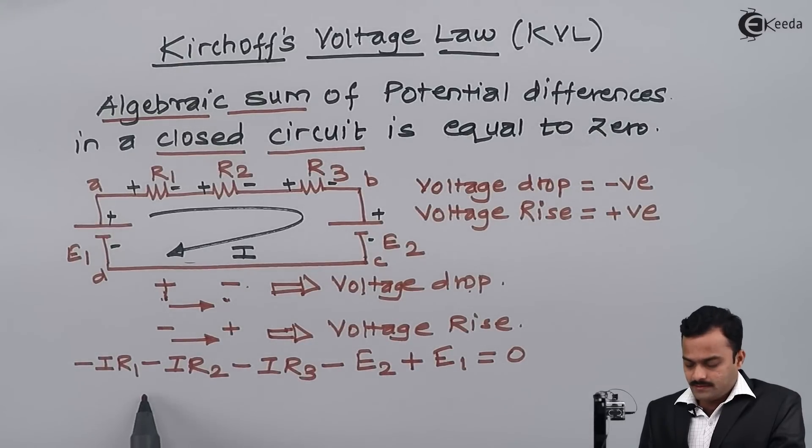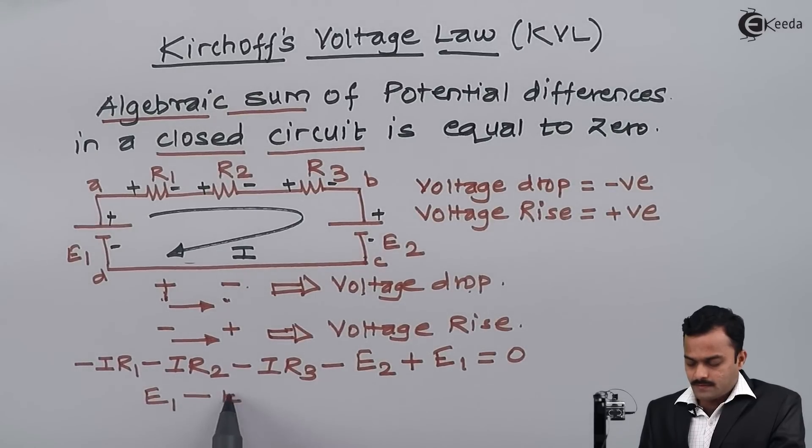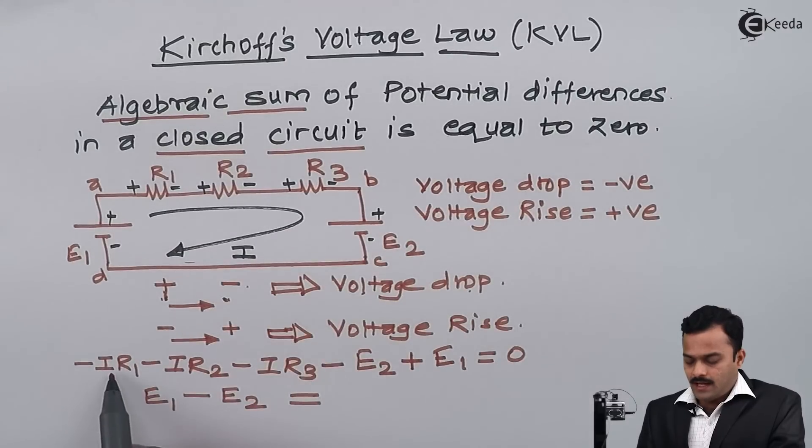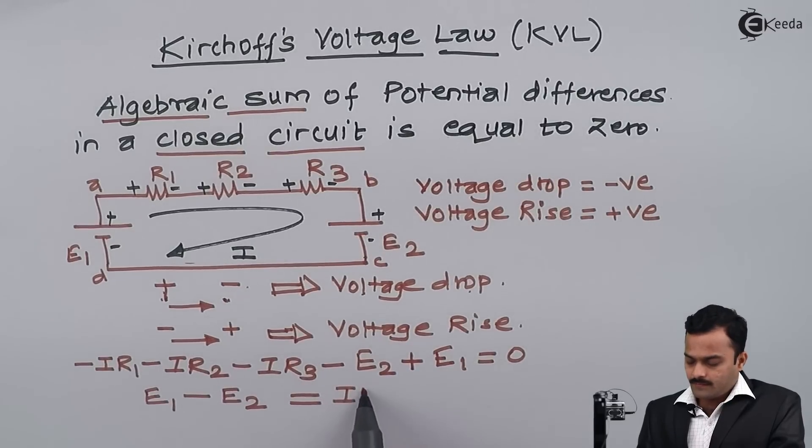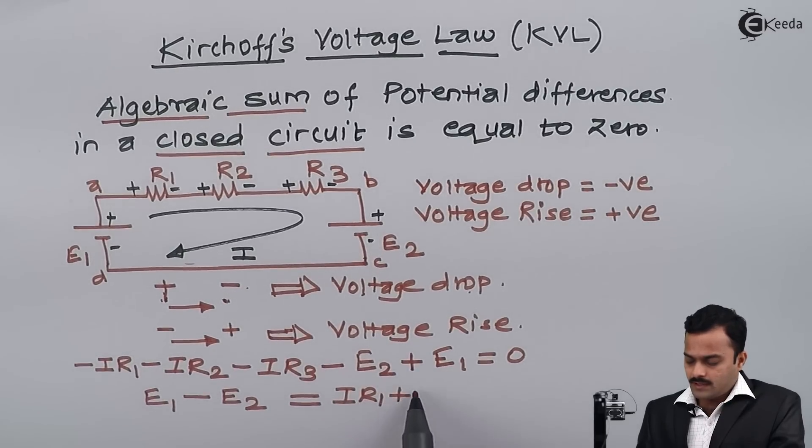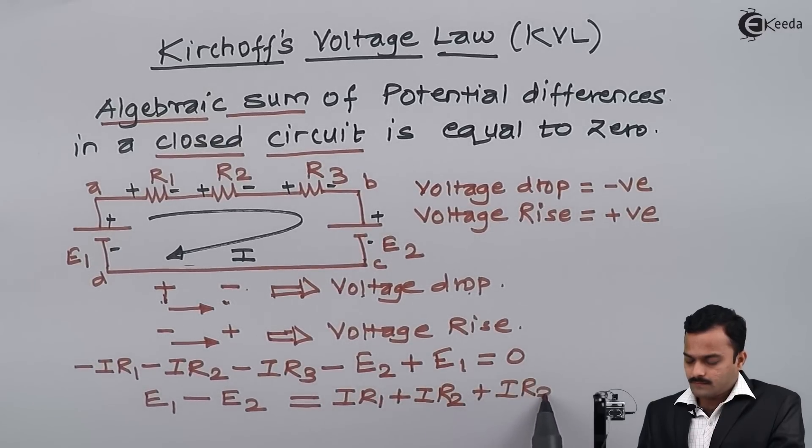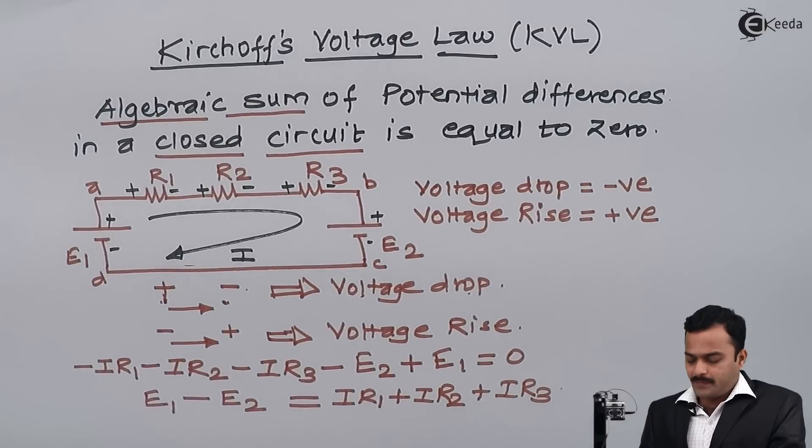E1 minus E2 equals these three: IR1, IR2, IR3 are the voltage drops. So I can write here IR1 plus IR2 plus IR3. Ultimately what is happening, all the potential and amount of energy will remain conserved.